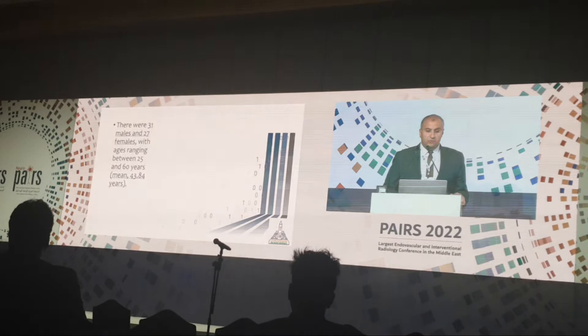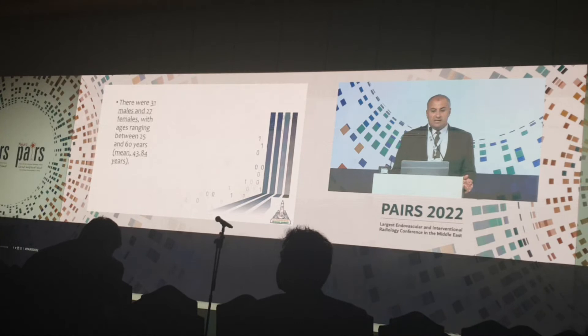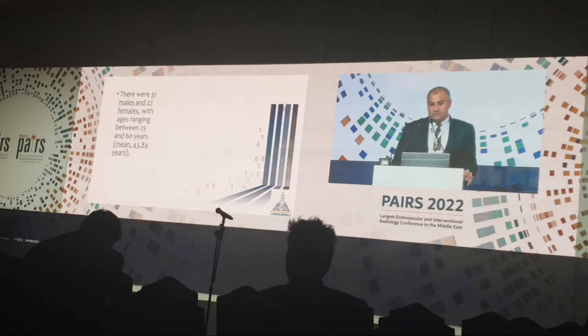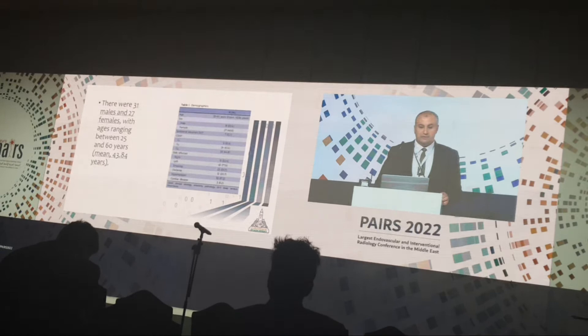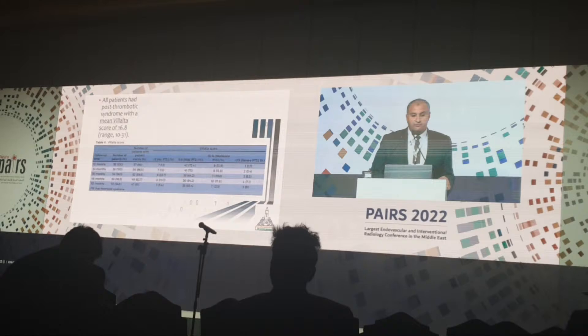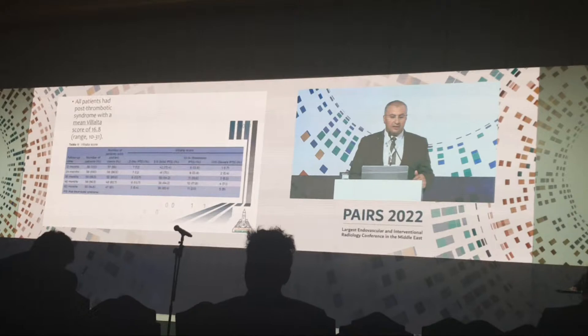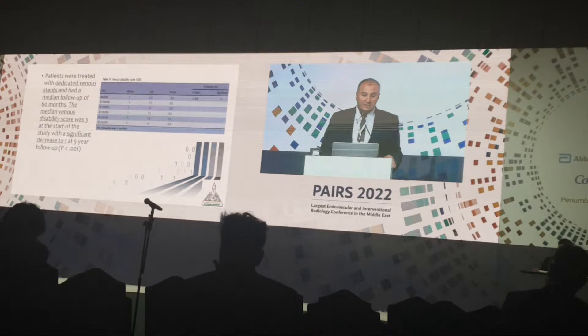Our results: there were 31 men and 27 females, with ages ranging from 25 to 60 years. We are dealing with both young and old patients — unlike treatment of acute DVT which is recommended mainly for young ambulant patients. All patients had post-thrombotic syndrome, with the venous disability score showing a significant decrease to 1 at 5 years. Patients were treated with dedicated venous stents and had a mean follow-up of 60 months.